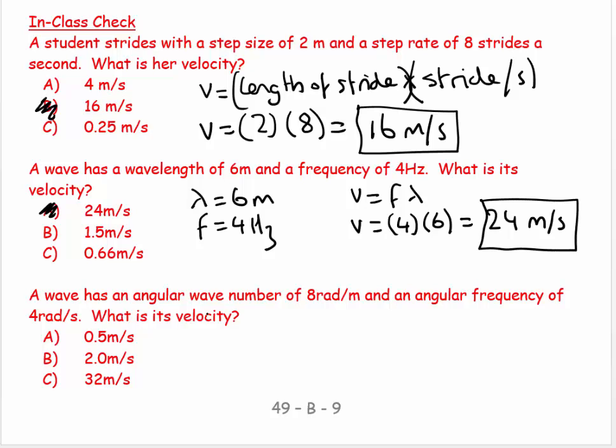And then the last one, a wave has an angular wave number K equal to eight radians per meter and an angular frequency omega equal to four radians per second. What is its velocity? Oh man, this is hard to remember, but it's not hard to figure out with units. I need to have meters on top and therefore my K must go on the bottom. And I need to have seconds on the bottom and therefore omega must go on top. Can you see that? If I have omega on top, I have radians per second.